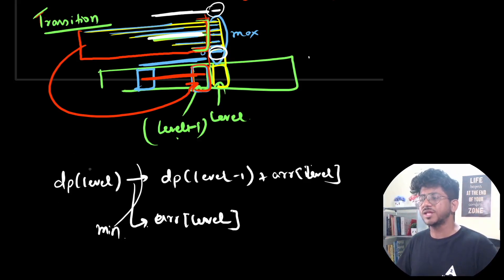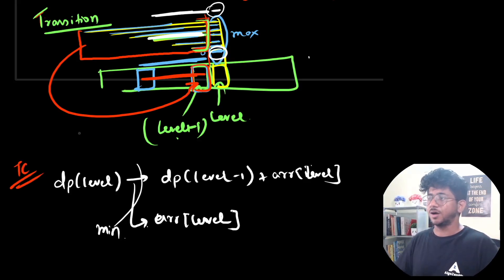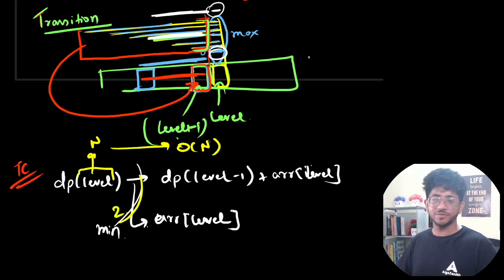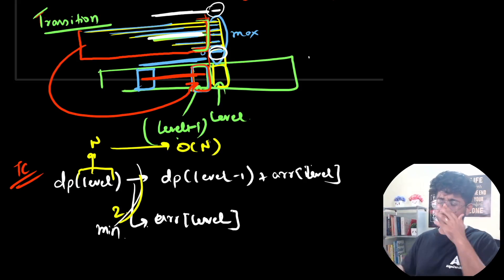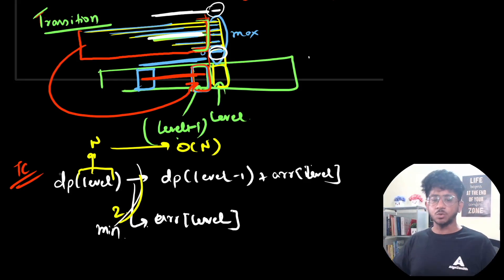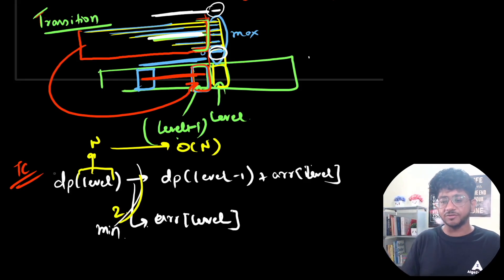Thinking about time complexity: the level can take N different values and there are only two transitions, so it's O(N). Once we're done with time complexity, we can simply code this up iteratively. Let's go ahead and quickly code this up.